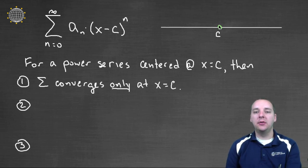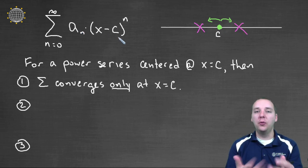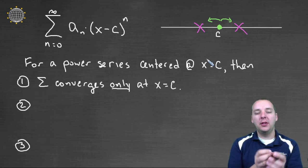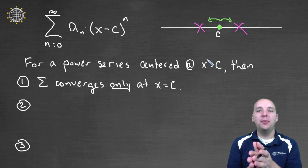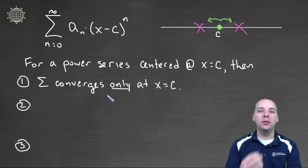The series converges only at c. This is an option. Maybe it converges at the center, but if you stepped to the left or to the right any, it would not converge any longer. So maybe your power series is centered at four, but if you move to let x be 4.1, that series wouldn't converge, or 3.9, that series wouldn't converge. But it always has to converge at the center, but maybe that's the only place where the series converges.